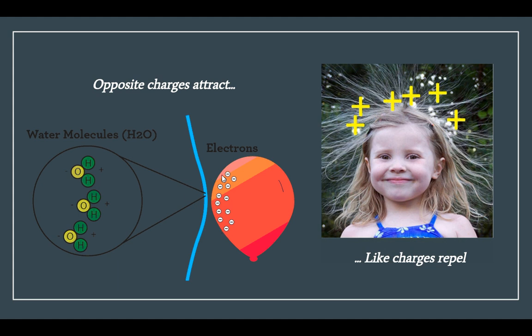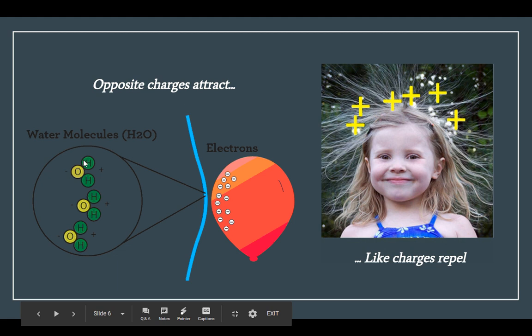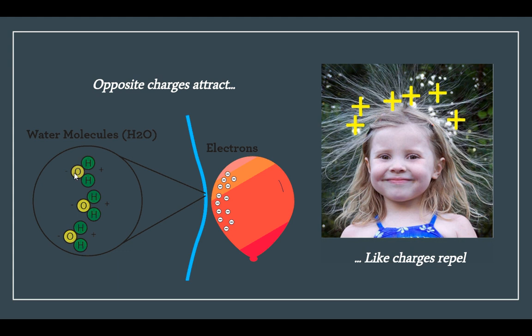When you rub a balloon on your head, there are more electrons on the balloon's surface because it stole them from your hair. Water is a dipolar molecule — one side has the hydrogen molecules which are more positively charged, and the oxygen side is more negatively charged. The charge on that molecule interacts with the charge on the balloon, and it will actually bend the water.